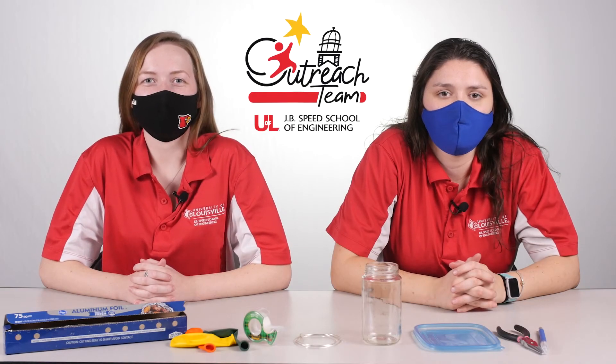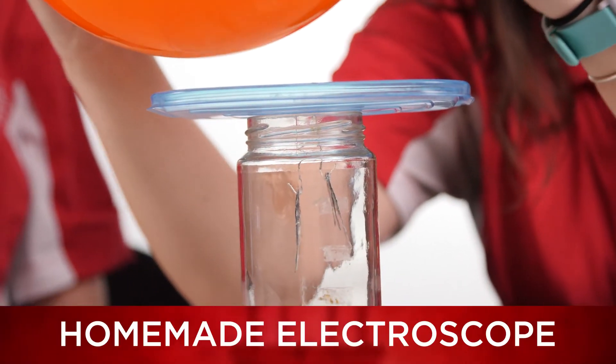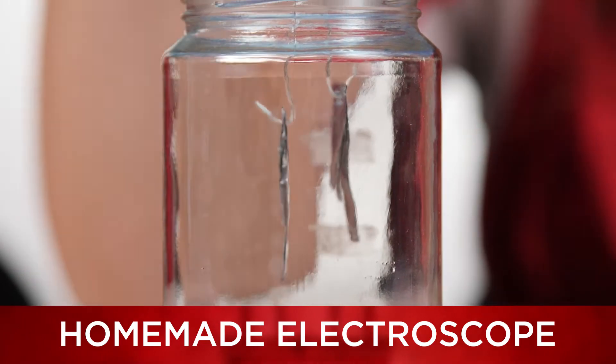Hi, welcome to Engineering Starts at Home. I'm Audrey. I'm Emery. And today we're going to be making a homemade electroscope. An electroscope is used for detecting and measuring electricity. Let's get started.